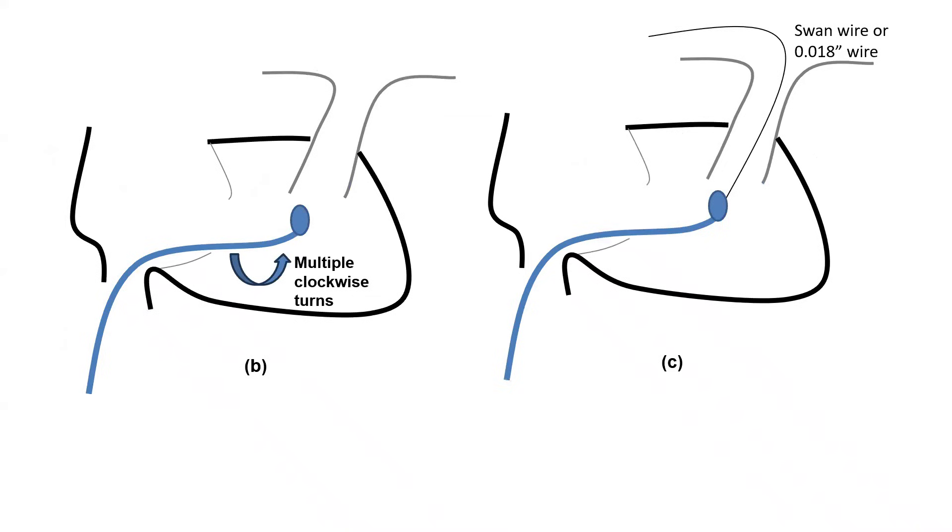The second technique is to advance the catheter at the base of the cardiac silhouette with the balloon inflated. Then do multiple 360 degree clockwise turns with back and forth push and pull until the catheter tip points superiorly and falls into the PA.